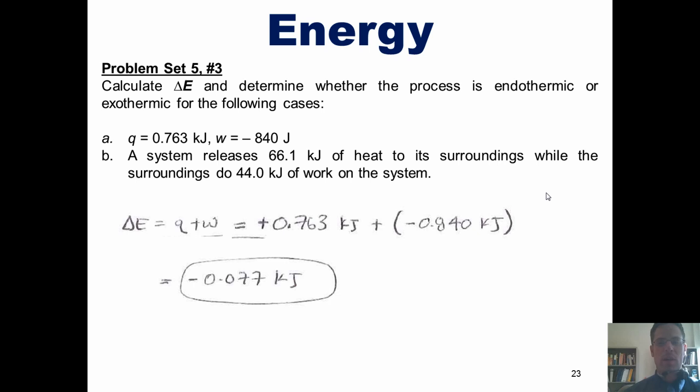It also asks us to determine whether it's endothermic or exothermic. Now, keep in mind this: The answer to this question only depends on the value of Q. If Q is positive, then it's endothermic. If it's negative, then it's exothermic. What in the world was Q? The original value given me was positive 0.763 kilojoules. Thus, this process is endothermic.